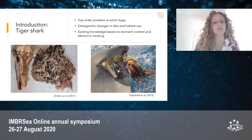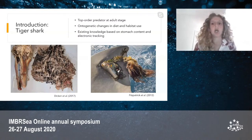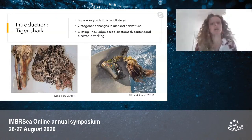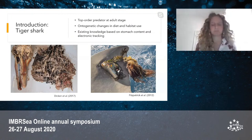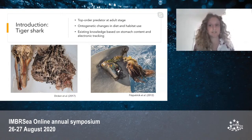Tiger shark is a large marine predator which is considered a top order predator at adult stage. Previous studies reported ontogenetic changes in diet and habitat use for this species. However, the understanding of this is mostly based on techniques such as stomach content analysis and electronic tracking.